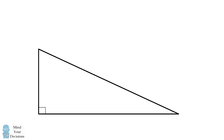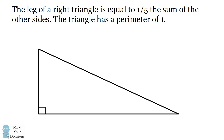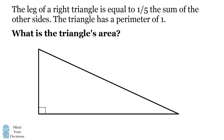Hey, this is Presh Talwalkar. The leg of a right triangle is equal to one-fifth the sum of the other sides. The triangle has a perimeter of one. What is the triangle's area? Can you figure it out? Give this problem a try, and when you're ready, keep watching the video for the solution.